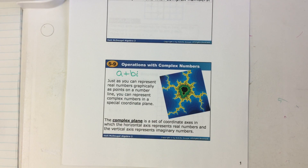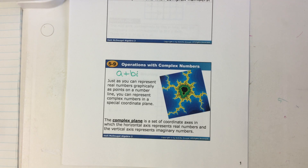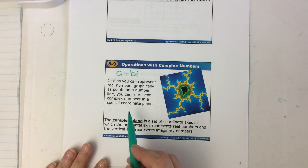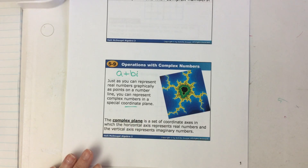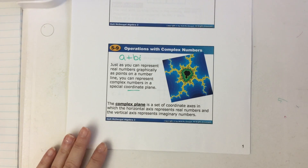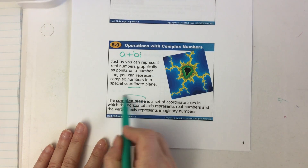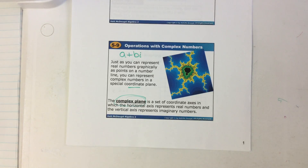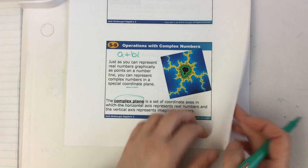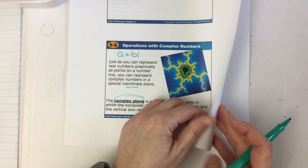Just like you can take a real number and graphically put it on a grid and show where that coordinate would be, we can also do that with complex numbers. In order to do that we need what's called a complex plane. Let's go ahead and see what that looks like.